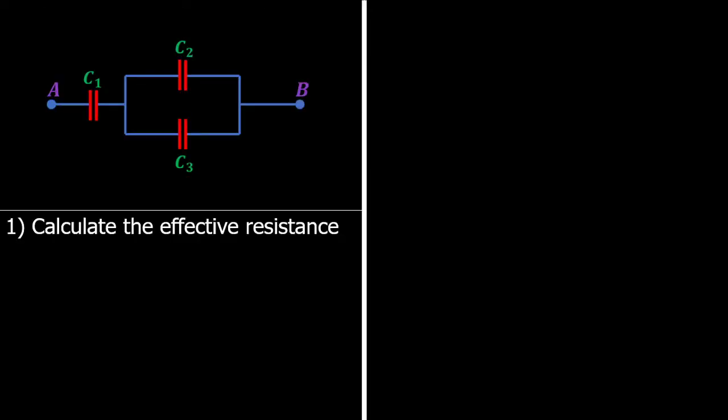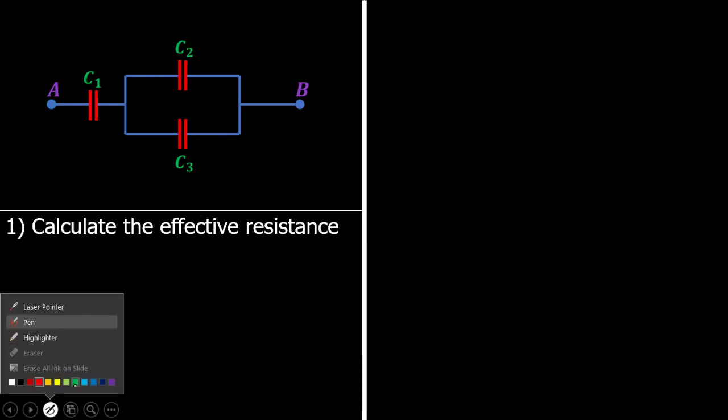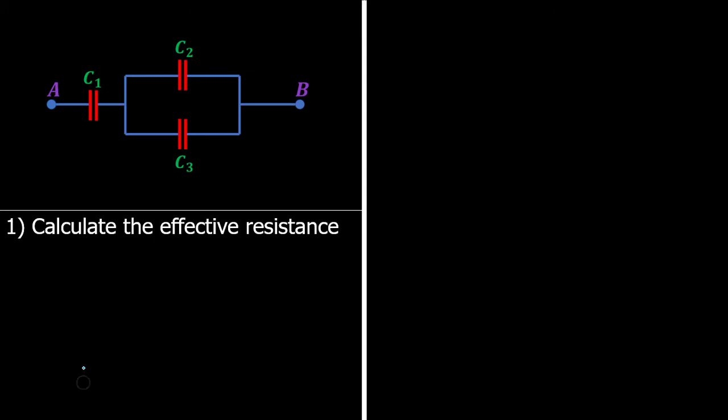Let's look at the first question. It says calculate the effective resistance. So as we've said before, C2 and C3 are in parallel, and C1 is in series with C2 and C3. So let's simplify C2 and C3 first.